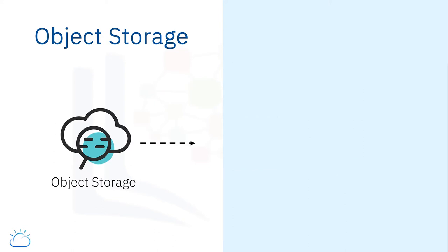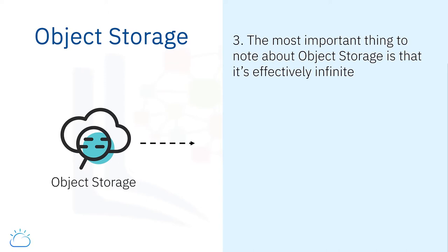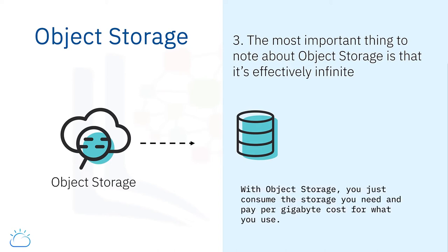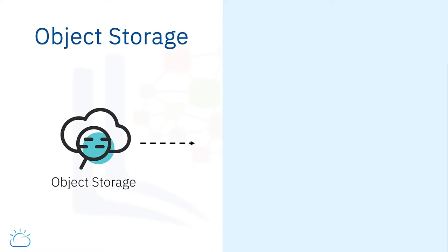The third and possibly most important thing to note about object storage is that it's effectively infinite. With file and block storage, you specify the size of the storage you want in gigabytes or terabytes and then pay a fee based on the size you provisioned. With object storage, you just consume the storage you need and pay a per gigabyte cost for what you use. You can keep uploading files and the storage will never run out.